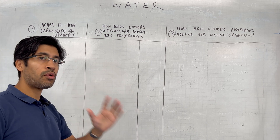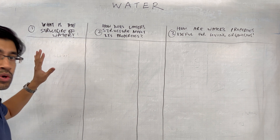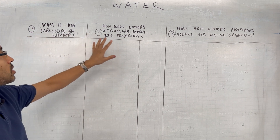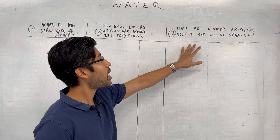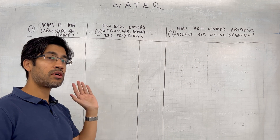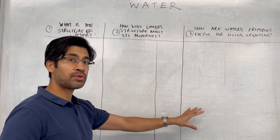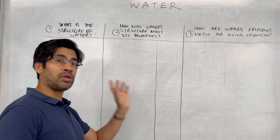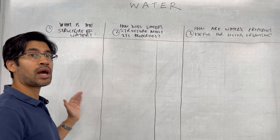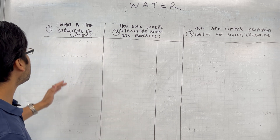It's water only — the bare essentials. We're going to have three questions as normal: what is the structure of water, how does water structure affect its properties, and how are water's properties important for living organisms? These questions are the main part of this. I'm going to explain my preferred answers, but I'd like you to take these questions and practice them again and again until you're basically as good at explaining them as I am.